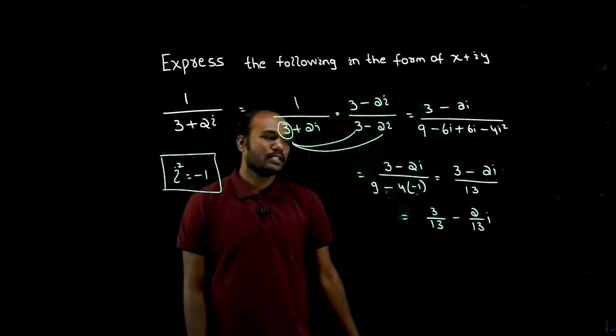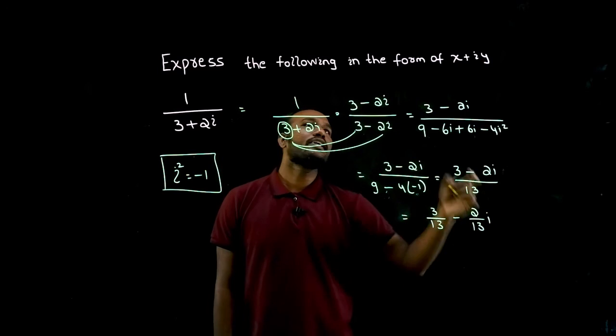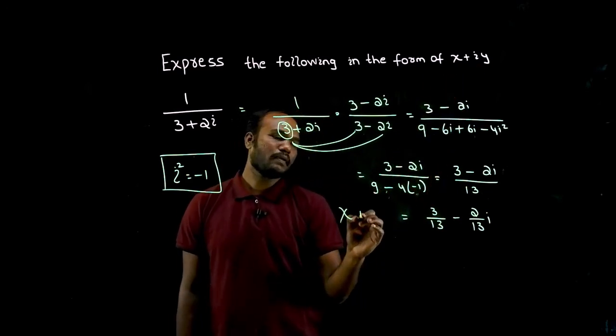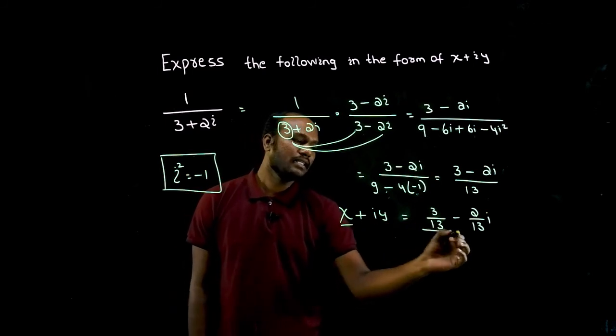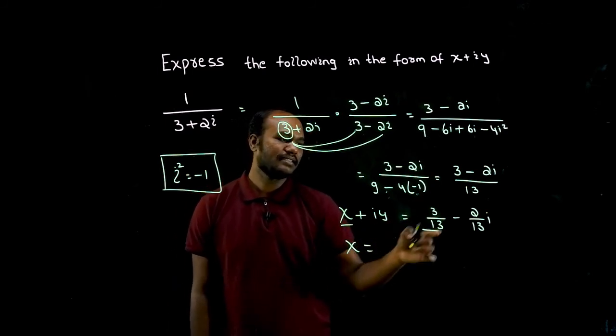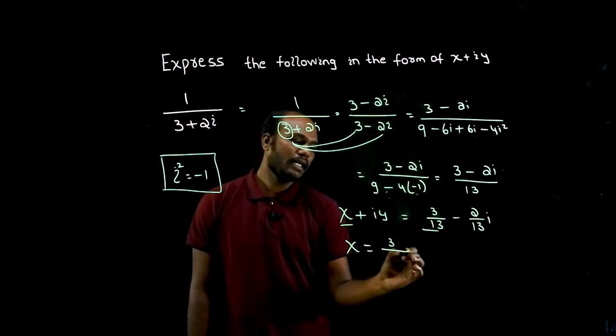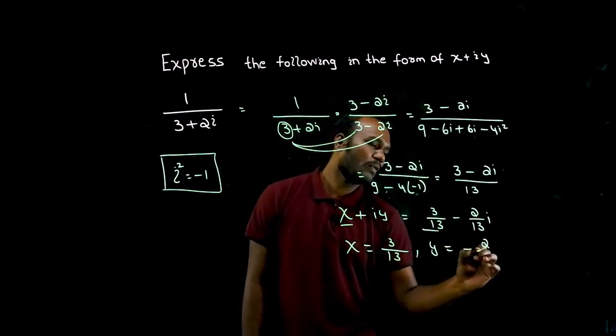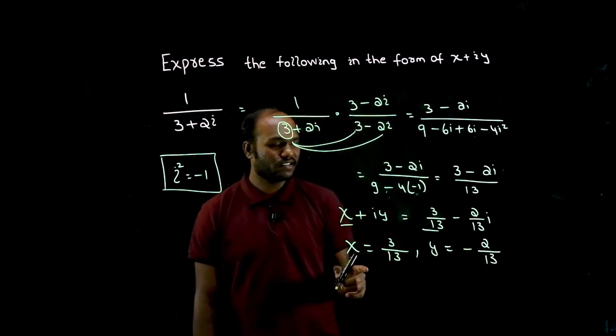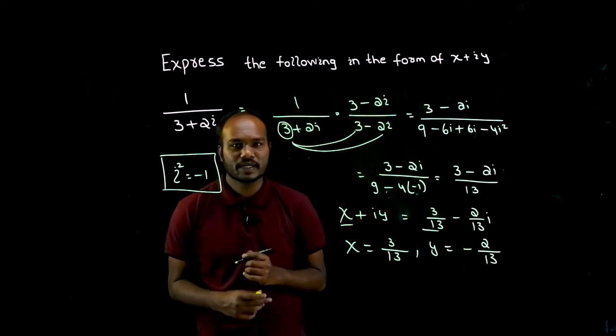Is that okay? So this is converted into x plus iy form. What is the value of x? I compare this and this, I get x value as this number that is 3 by 13. What is the value of y? y value is this number that is minus 2 upon 13. x value is this, y value is this. Is that okay?